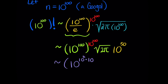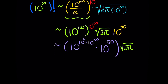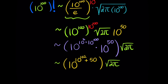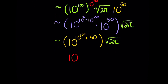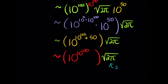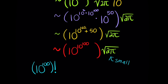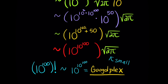We evaluate the square root of 10 to the 100th power as 10 to the 50th power. Writing 100 as 10 squared and combining all powers of 10, we pull out the constant square root of 2 pi. The first term is 10 to the (10 to the 102) power plus 50, but that plus 50 is negligible, so this is essentially 10 to the (10 to the 100th) power. The square root of 2 pi is tiny compared to that, so we neglect it. Therefore, a googol factorial is approximately equal to 10 to the (10 to the 100th) power — also known as a googolplex. A googol factorial is approximately equal to a googolplex.